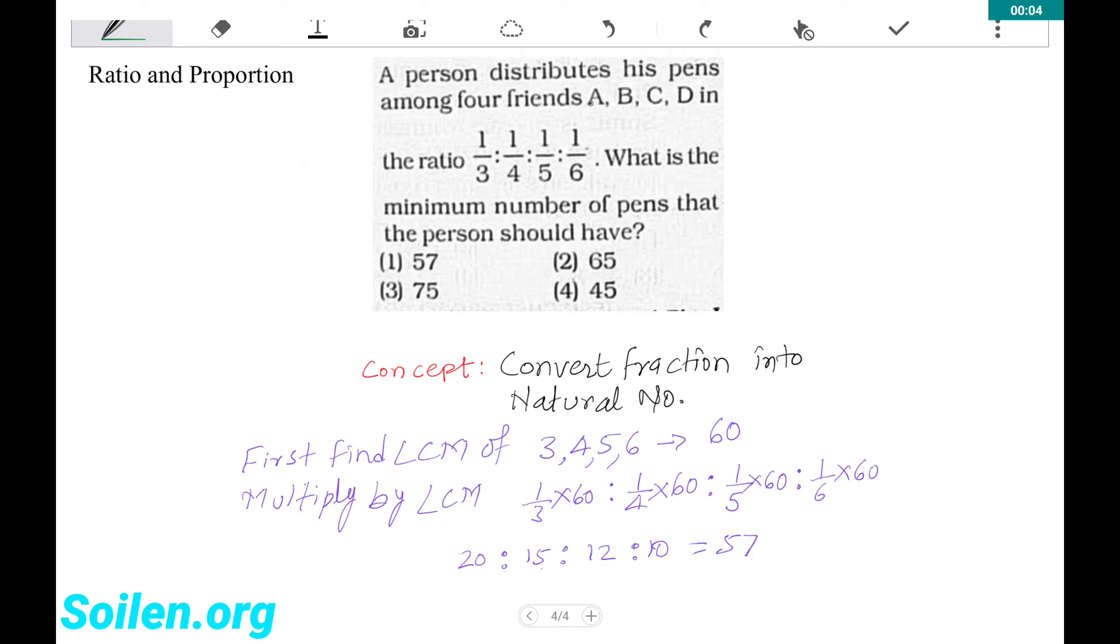A person distributes his pens among four friends A, B, C, D in the ratio 1 upon 3 is to 1 upon 4 is to 1 upon 5 is to 1 upon 6.